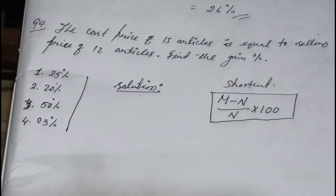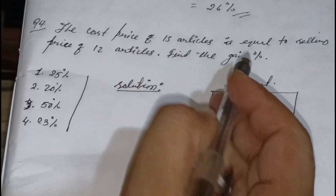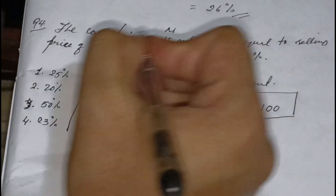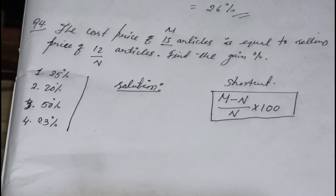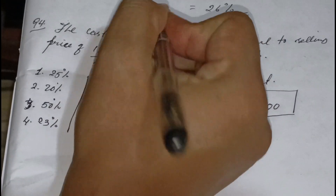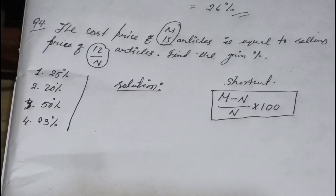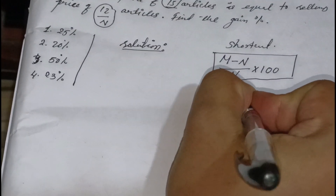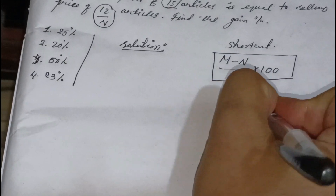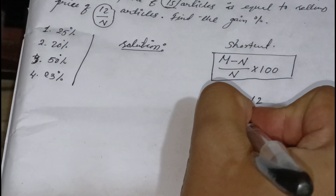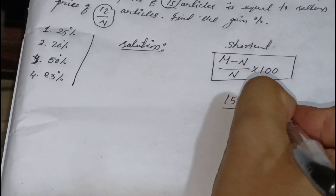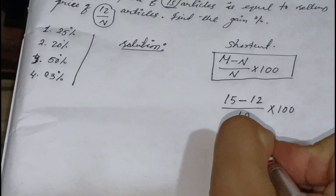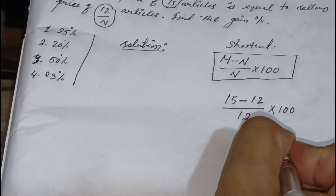How do we use the formula? If we put in the values, we need to get back to cost price and selling price. The formula is: (m minus n) by n, into 100, where m is the cost price articles count and n is the selling price articles count. So m equals 15, n equals 12, answer equals (15 minus 12) by 12 into 100.